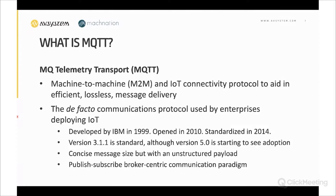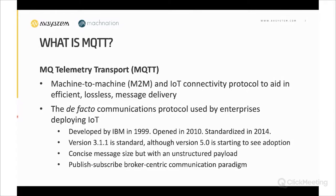MQTT has been around for a while, standardized for nearly a decade. It was originally developed as a constrained network protocol, believed to have originated in the oil and gas industry. Version 3.1.1 is the de facto standard; there is a version 5 with some new features, but broadly the same underlying concepts, and we haven't seen much adoption of version 5 yet.